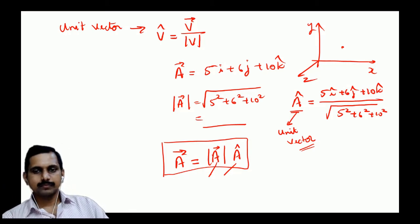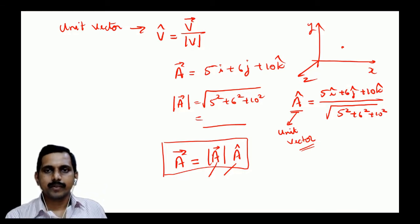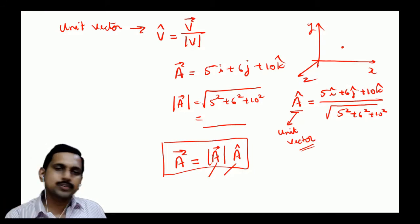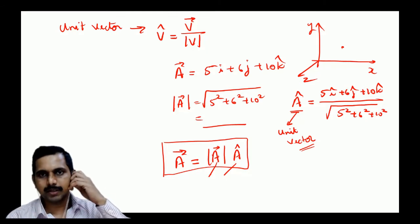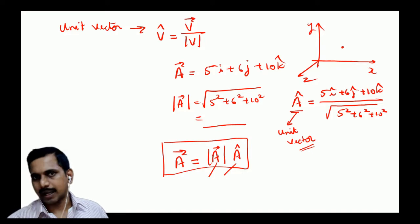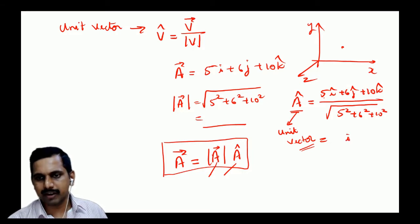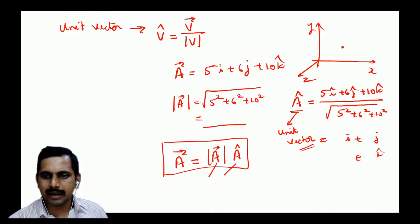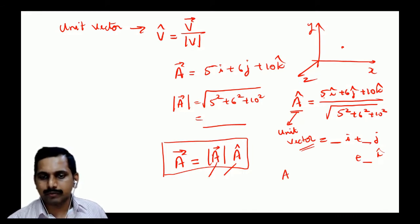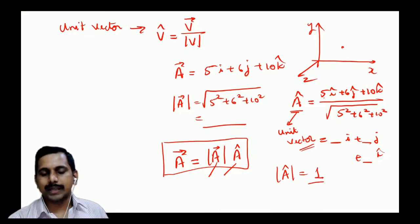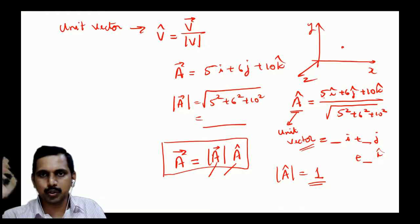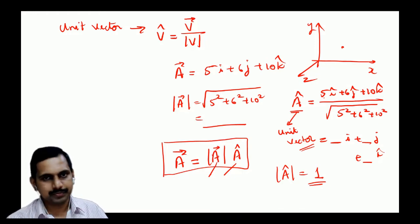The unit vector gives the direction, and its magnitude is always equal to 1. You can verify this by computing the magnitude of the unit vector — it always comes out to 1. Unit vector is always unity; it shows direction only.